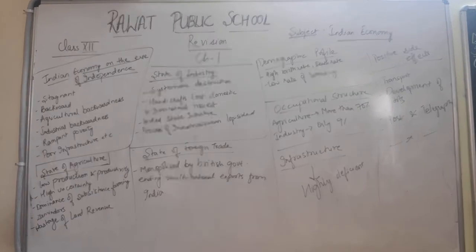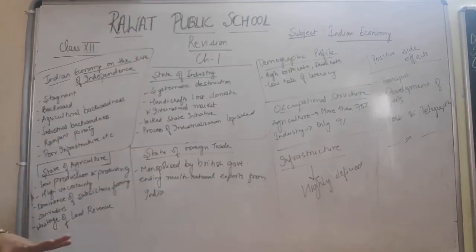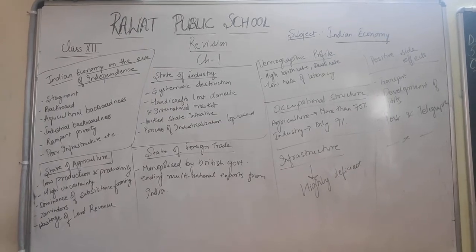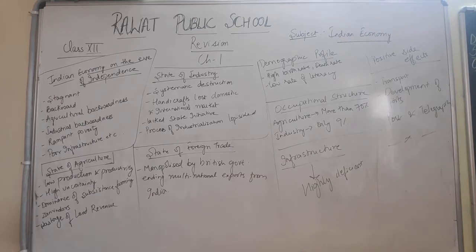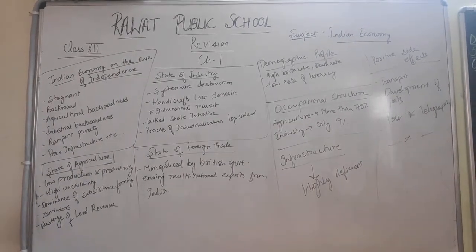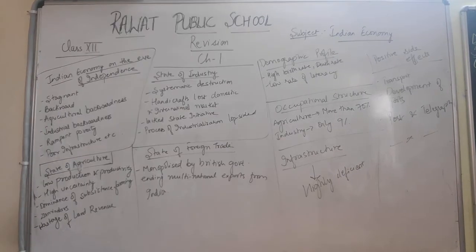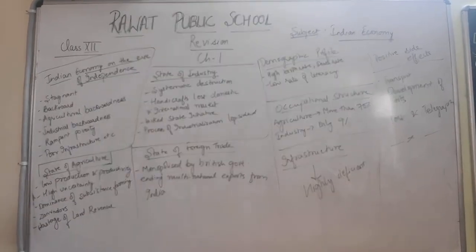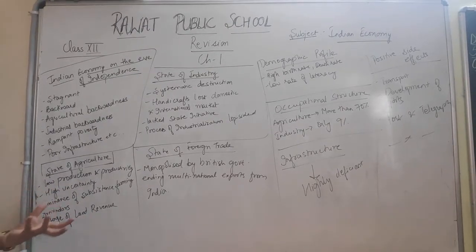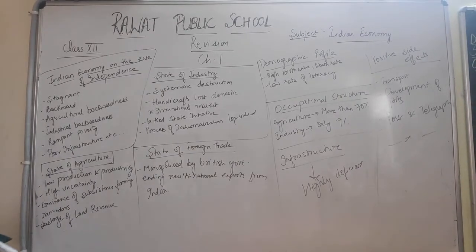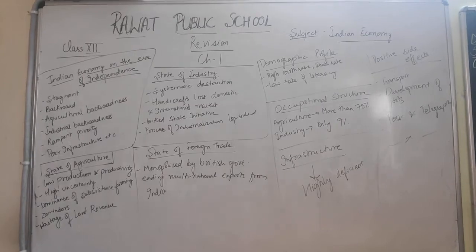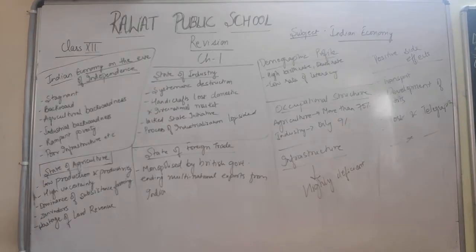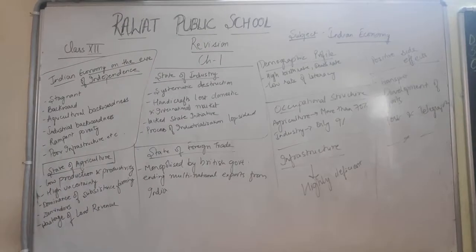Next topic is the state of agriculture. India's agriculture showed the following characteristics under British rule. There was very low production and productivity. Productivity means output per unit of input — the higher the output from given resources, the higher the productivity. There was high uncertainty because agriculture was quite dependent on environmental factors and irrigation facilities. At that time there was a lack of modernization, so there was a lot of dependence and uncertainty. There was dominance of subsistence farming. The tillers of the soil, the poor farmers, were in a very bad condition.